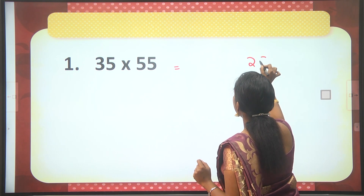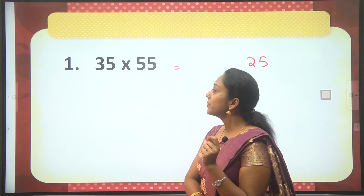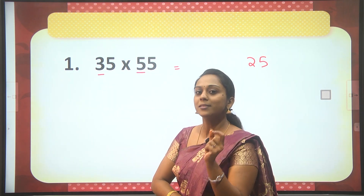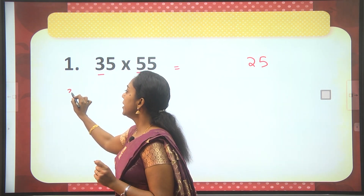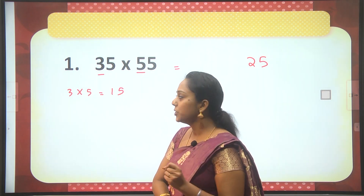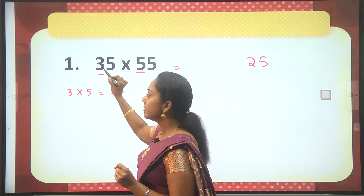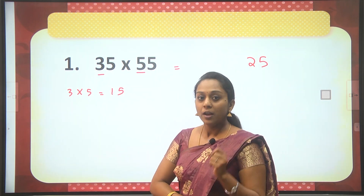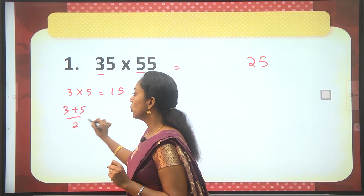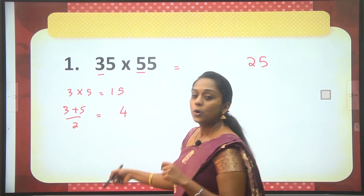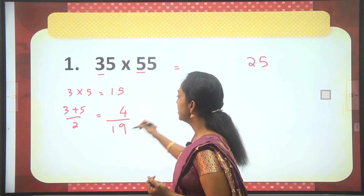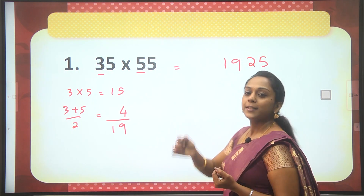So we know our product ends in 25 — those are the last two digits. Next, we multiply the two digits: 3 into 5 is 15. Then we take the average of 3 and 5: (3+5)/2 = 8/2 = 4. Add that average to the product: 15 + 4 = 19. So our answer is 1925.